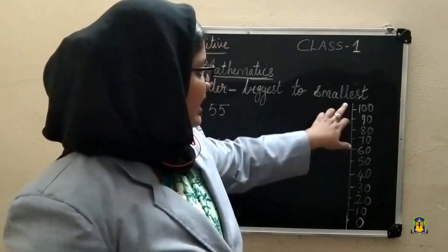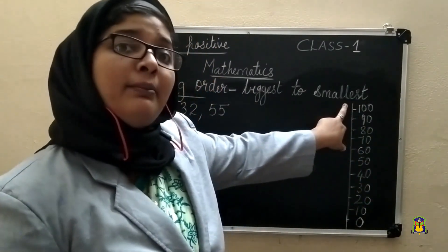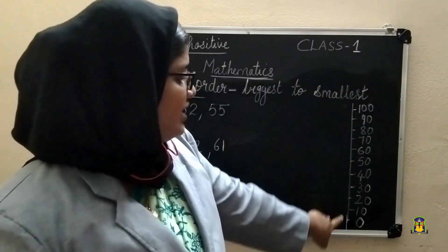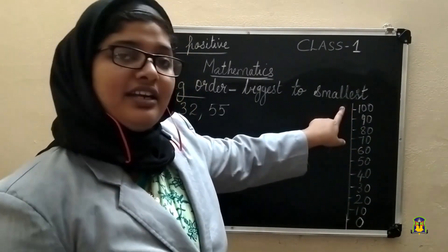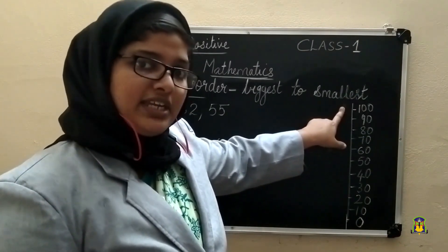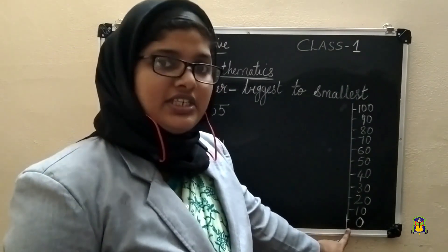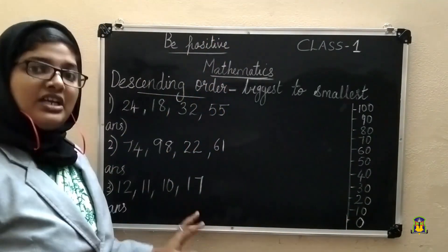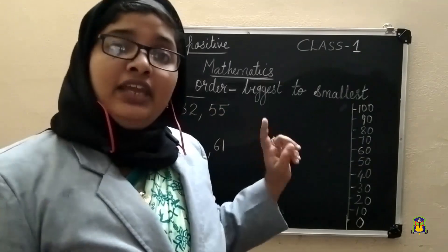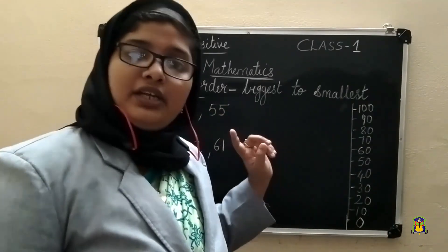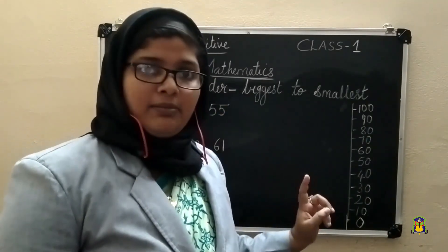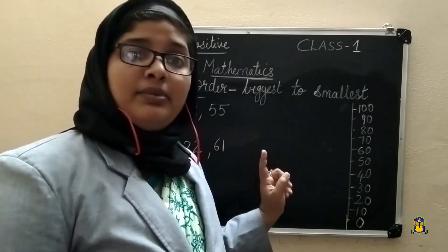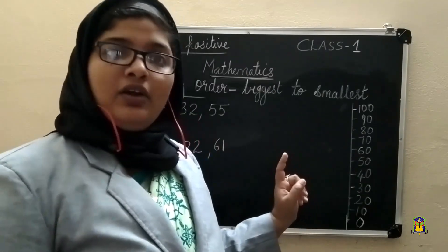Just like in ascending order we arranged numbers from 0 to 100, here for descending order we arrange from 100 to 0. 100 is the largest, biggest number and 0 is the smallest number. For ascending order we write the smallest number first; here for descending order we write the largest number first.